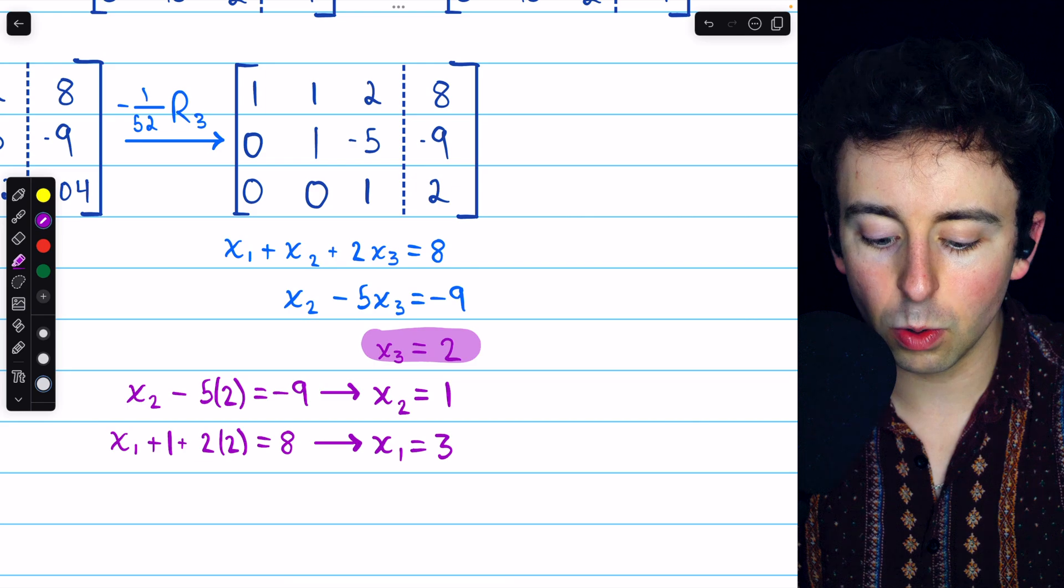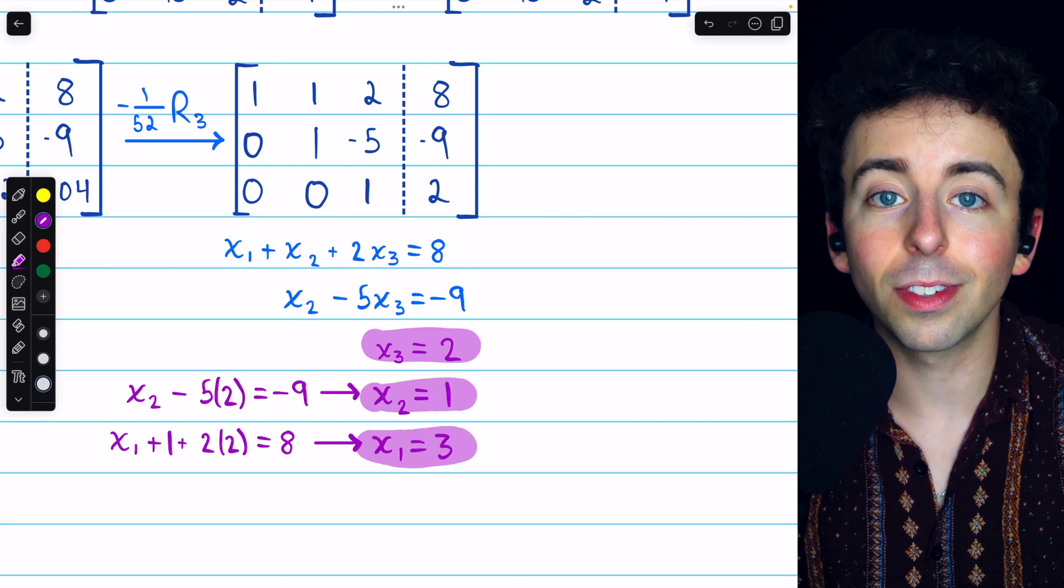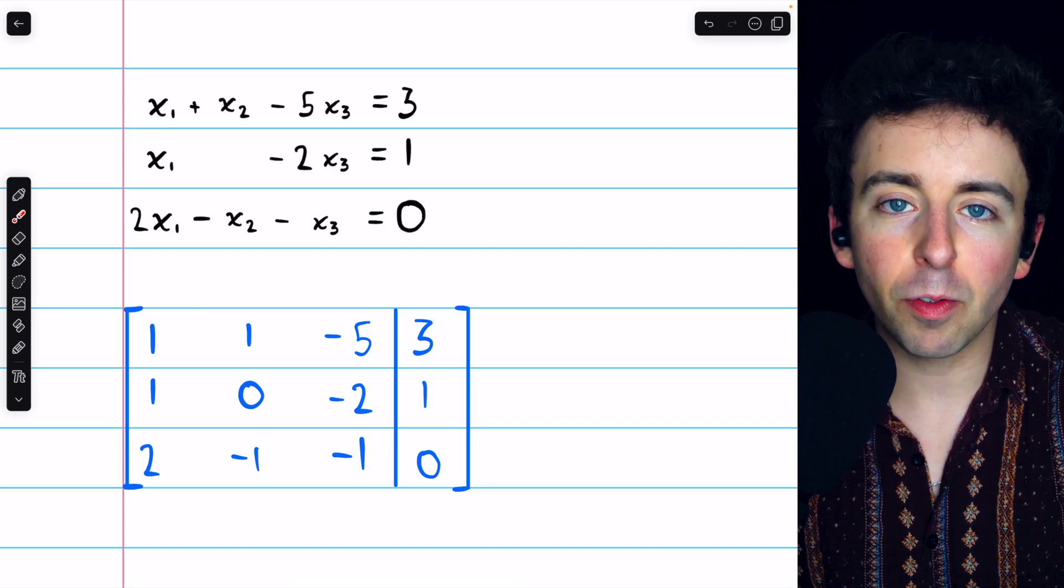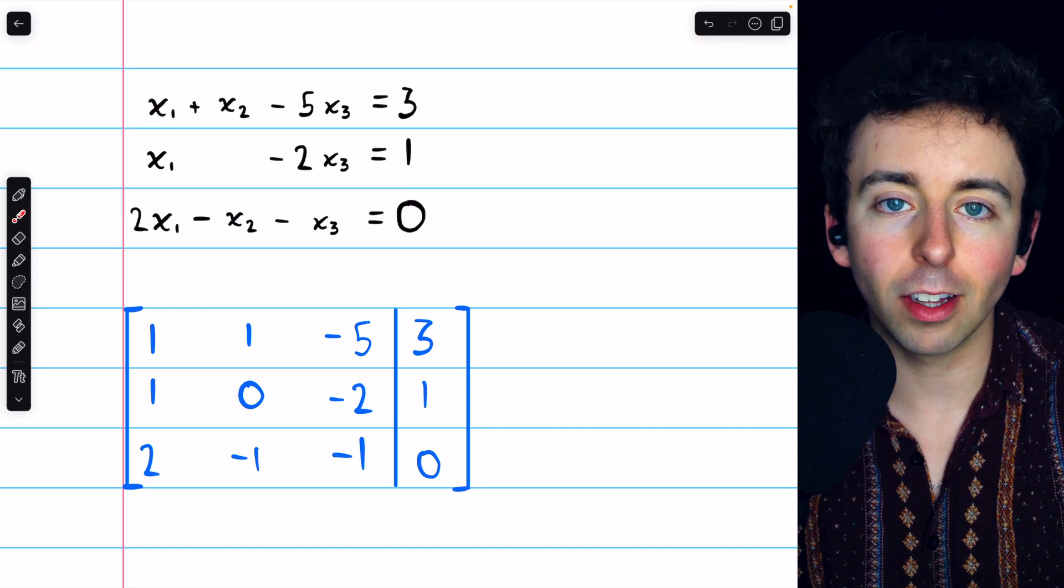And so that is the solution to this system. x3 equals 2, x2 equals 1, and x1 equals 3. Let's quickly do one more example. This one's a little bit different because it actually has infinitely many solutions.